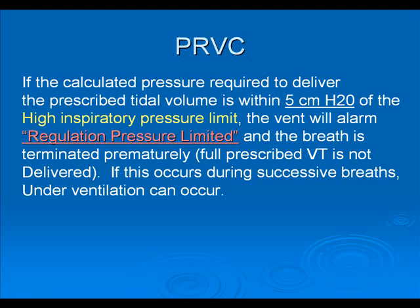We spoke earlier about the upper pressure limit, which we set as a cutoff so that the ventilator just doesn't keep increasing pressure to meet the set tidal volume. Normally it's somewhere between 35 and 40 as a safe limit. If the upper pressure limit is hit, then the ventilator will alarm regulation pressure limited and the breath is terminated. In other words, the full prescribed tidal volume is not delivered. If this occurs for multiple breaths, then the patient can be underventilated.